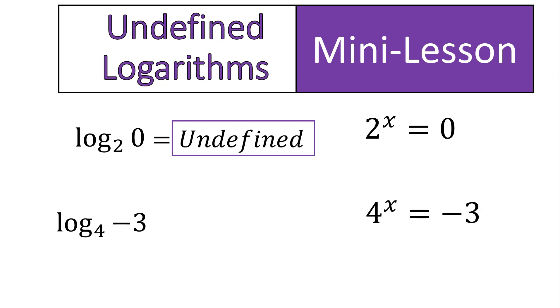It's a similar situation with our second example, 4 to the power of x is equal to negative 3. You can't do that. There's no way to give a positive number an exponent that will make it into a negative number. If the exponent's negative, it will just become a fraction, right? Negative numbers with exponents can become positive and negative, but a positive number cannot become negative because of the exponent that it has. So this would also be a situation where it is undefined.